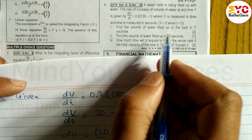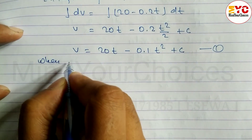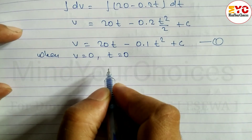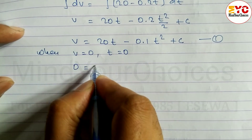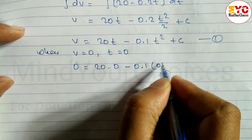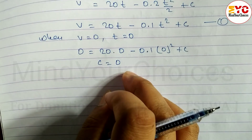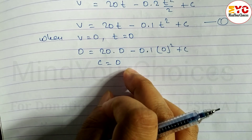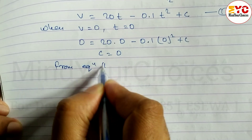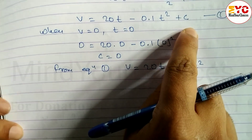Applying the initial condition: when v = 0 and t = 0, substituting into equation 1: 0 = 20(0) − 0.1(0)² + c, so c = 0. Substituting c = 0 back into equation 1: v = 20t − 0.1t². This is equation 2.